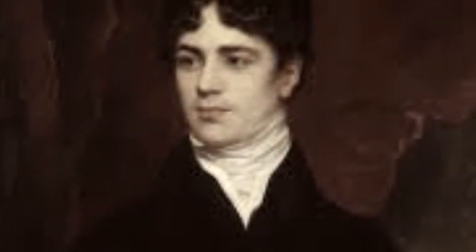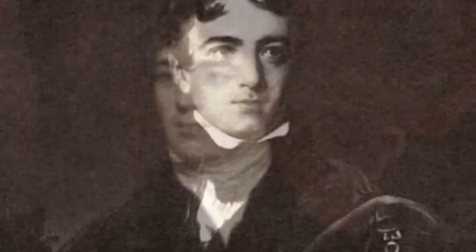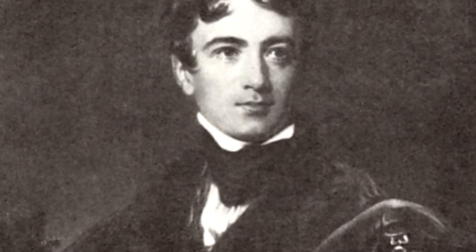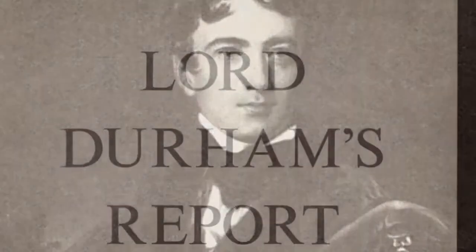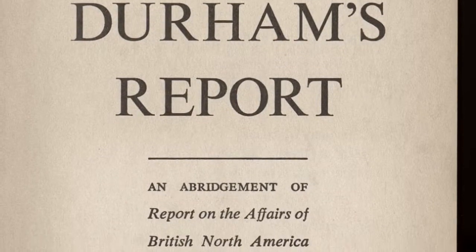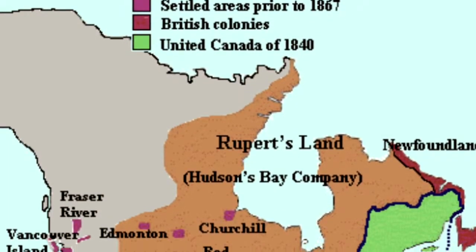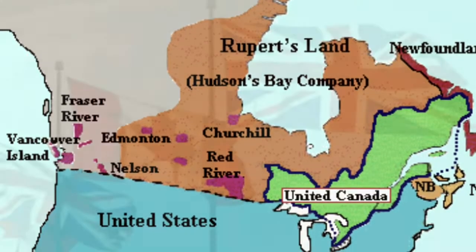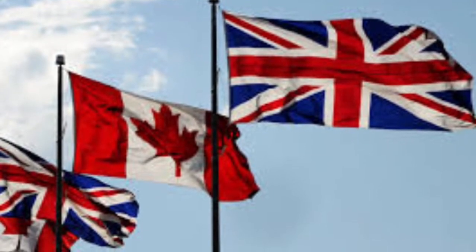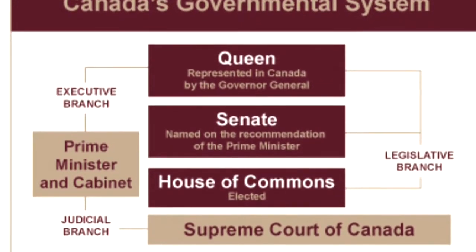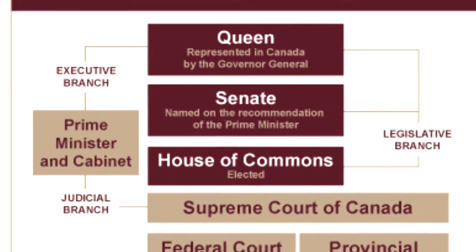Lord Durham was sent to North America by Britain to investigate the colonial grievances after the Upper Canada and Lower Canada Rebellions. When he returned to Britain in 1839, he completed his report on the affairs of British North America, known as the Durham Report. He recommended that Upper and Lower Canada join to create a single province and that all debt would be erased. He recommended that people from Britain should move to Canada so that the ratio of French Canadians to British Canadians would be more balanced. He also recommended that a responsible government should replace the current imperial government.